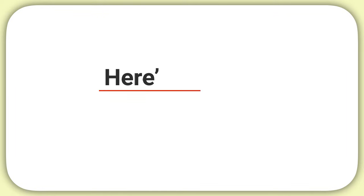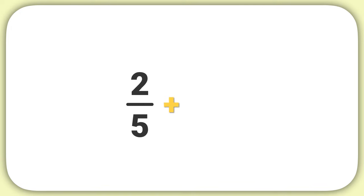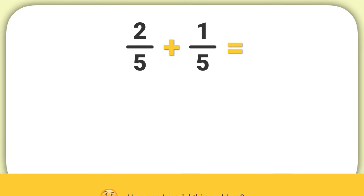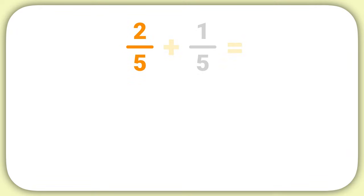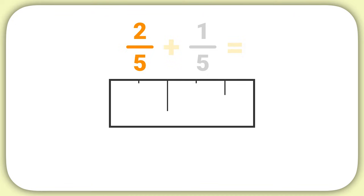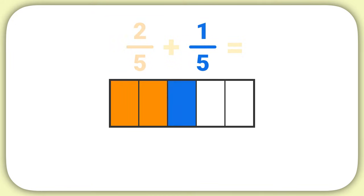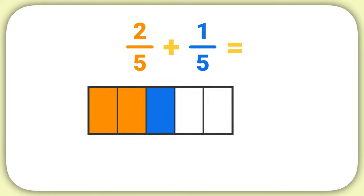Here's another problem to practice with. Let's figure out what two-fifths plus one-fifth equals. Well, which of these shows how I can model this problem? First I'll model two-fifths. I'll draw a rectangle and shade in two-fifths of the rectangle. To add one-fifth, I just shade in one more-fifth. Now that I've drawn my model, I need to write it as a fraction.